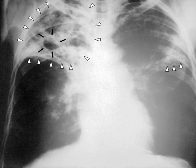After TB was determined to be contagious in the 1880s, it was put on a notifiable disease list in Britain, campaigns were started to stop people from spitting in public places, and the infected poor were encouraged to enter sanatoria that resembled prisons. The sanatoria for the middle and upper classes offered excellent care and constant medical attention. Whatever the benefits of the 'fresh air' and labour in the sanatoria, even under the best conditions, fifty percent of those who entered died within five years. When the Medical Research Council was formed in Britain in 1913, its initial focus was tuberculosis research. In Europe, rates of tuberculosis began to rise in the early 1600s to a peak level in the 1800s, when it caused nearly 25 percent of all deaths.